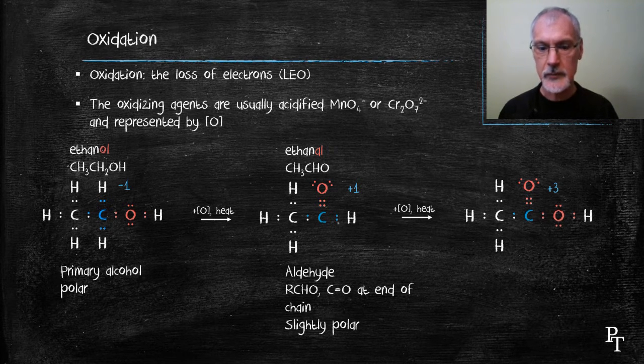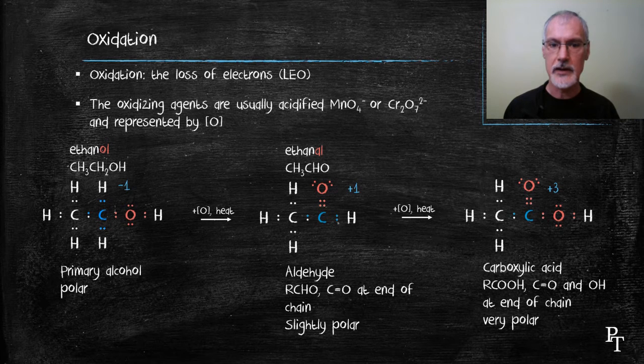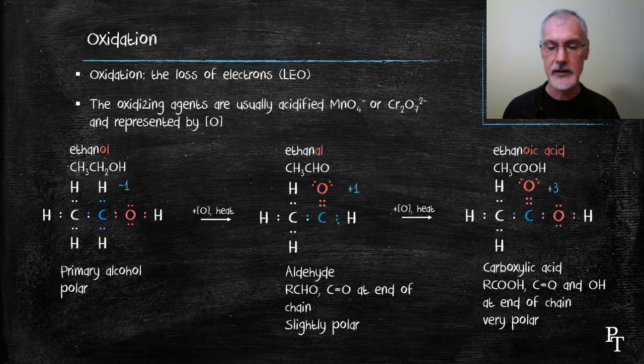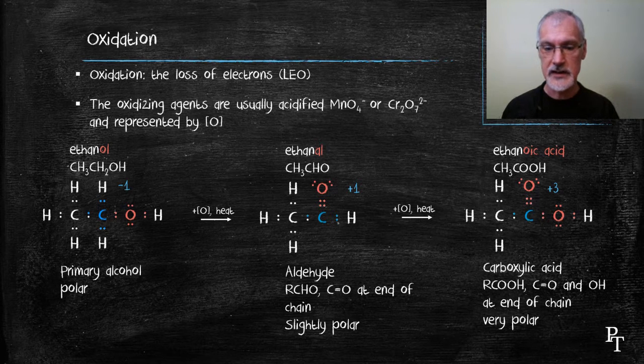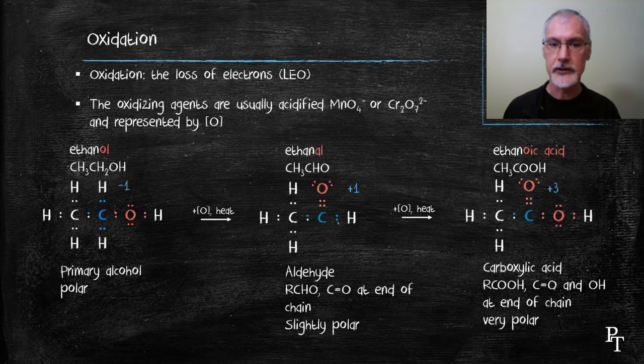If I continue to oxidize my compound, I'll produce a class of compounds called the carboxylic acids. The carbon is double-bonded to an oxygen and an OH group at the end. These molecules are highly polar.